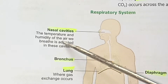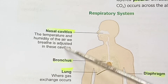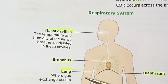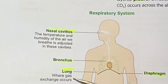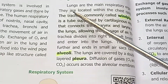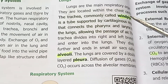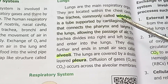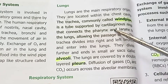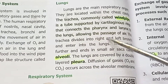The temperature and humidity of air we breathe is adjusted in the nasal cavities. The lungs are the main respiratory organs, located within the chest cavity. The trachea, commonly called the windpipe, is a tube supported by cartilaginous rings that connects the pharynx and larynx to the lungs, allowing the passage of air.